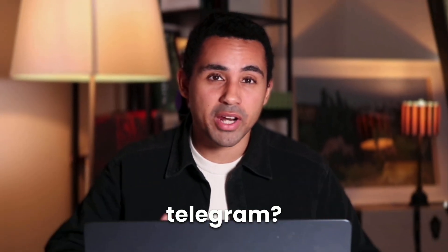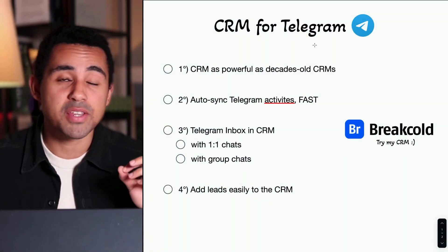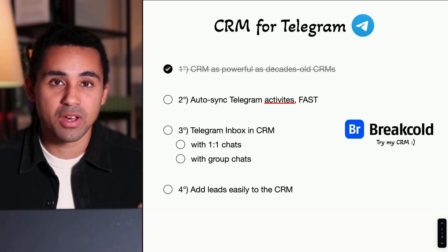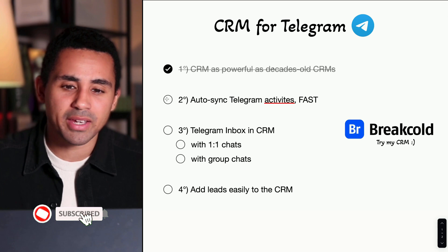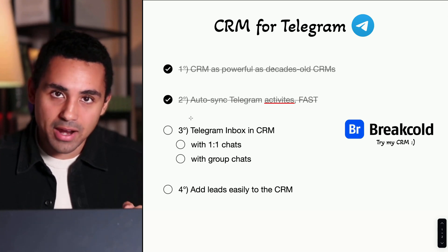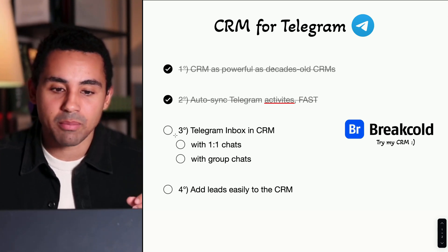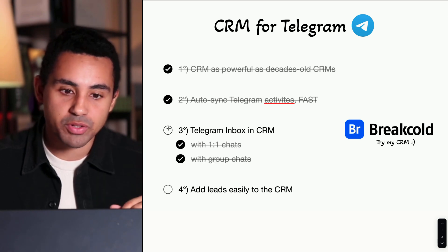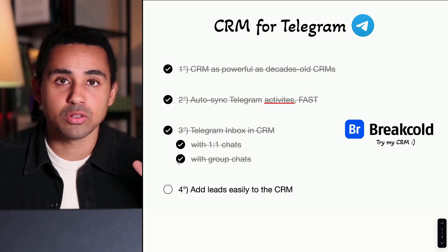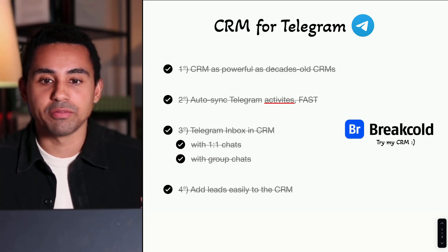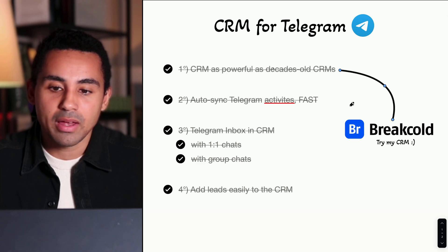Do you need a CRM for Telegram — a CRM as powerful as decade-old CRMs like Pipedrive, HubSpot, or Salesforce — but one that auto-syncs with Telegram activities? Do you want a CRM where you have a Telegram inbox inside it, with both one-to-one chats and group chats, and where you can add your Telegram leads to the CRM super easily? If you seek all of this, check out Brackle — this is the best solution out there right now.